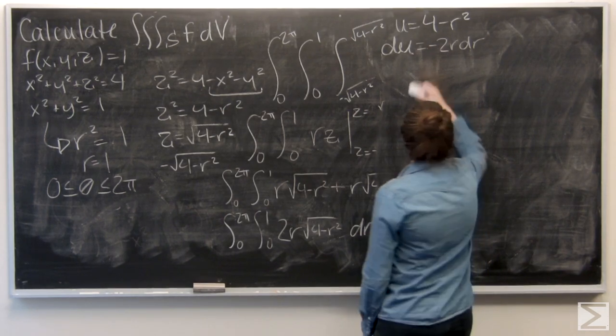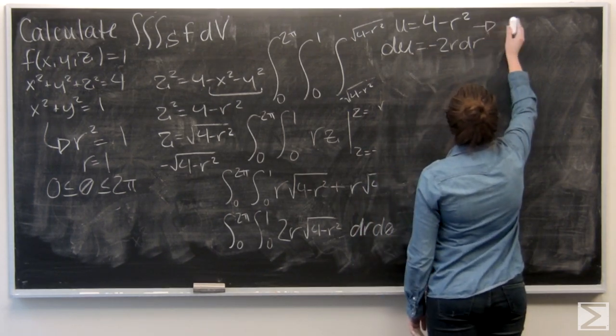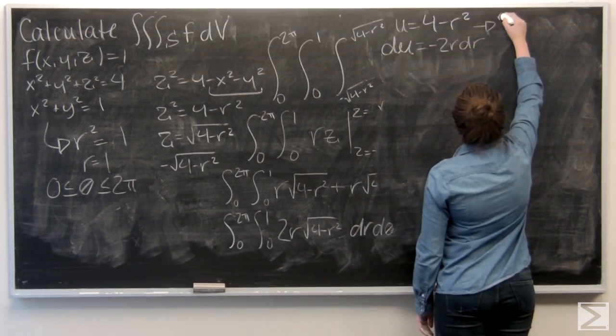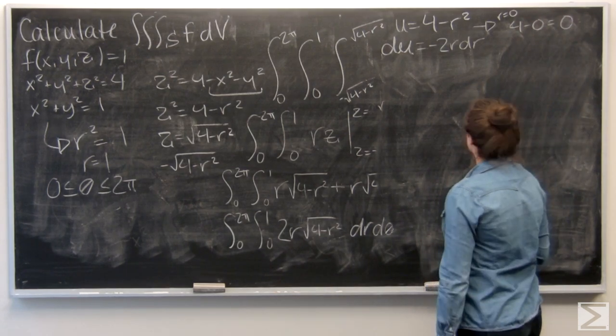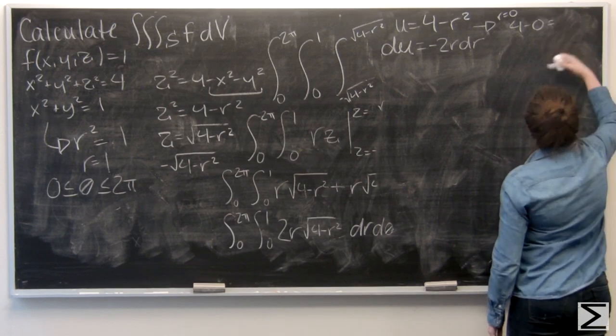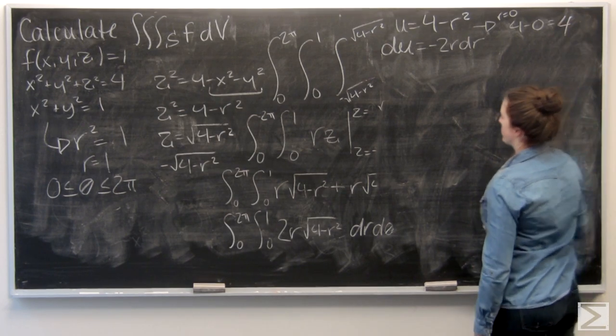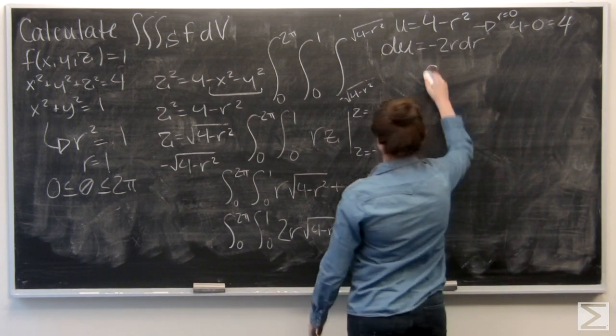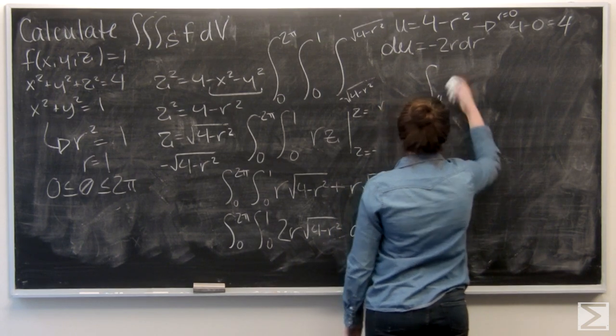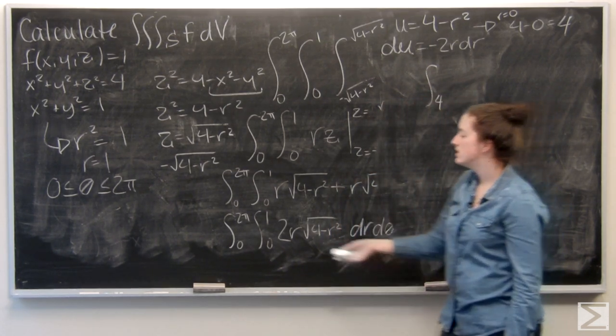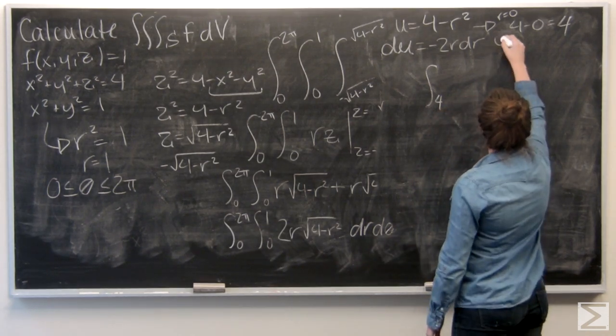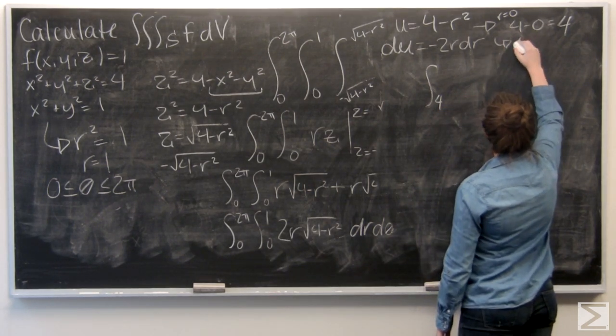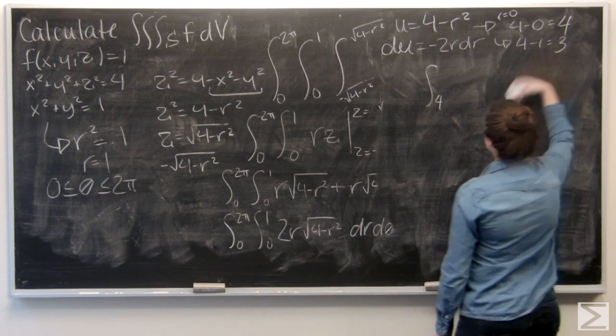So I'm going to do the bottom condition first, where r equals 0. So what am I doing? 4 minus 0 equals 4. So that's going to be my lower bound. Now let's work on the upper bound. Here it was r equals 1. So now let's solve for u. 3.